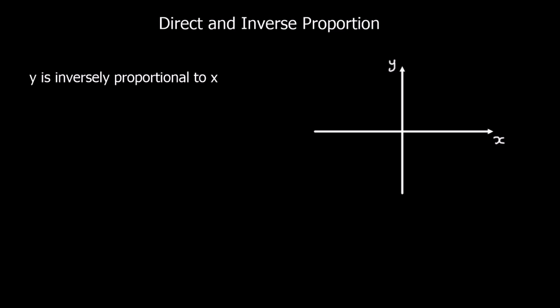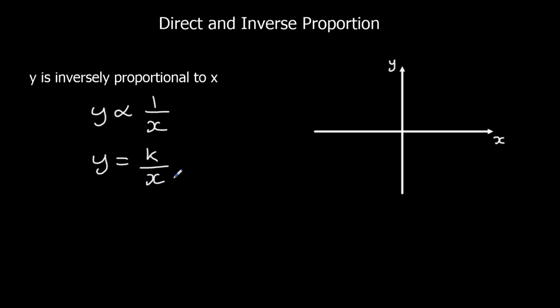Now let's look at inverse proportion. Y is inversely proportional to x, which is written as y is proportional to 1 over x. So y is inversely proportional to x is written with the proportionality symbol then 1 over x. As an equation, that's y equals k over x. On a graph, that looks like a curve — the graph of y equals something over x. The value of k could be different depending on the relationship, so k could be 2, 3, 4, or any number.